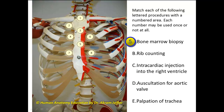Here is the sternal angle — it's a joint — and here is the jugular notch. So this part of the sternum, the body of the sternum, is used for bone marrow biopsy.